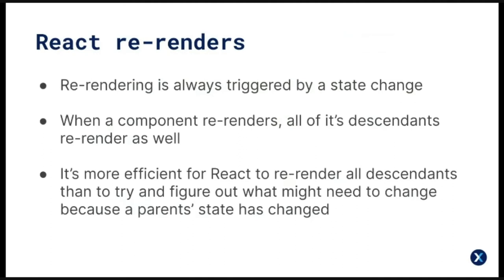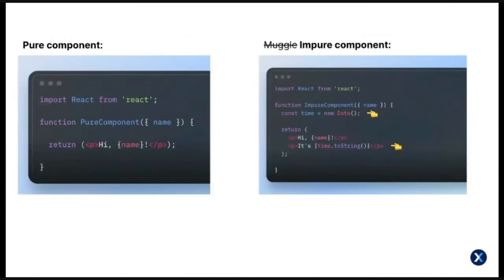React assumes that your components aren't pure. A pure component is one that would always produce the same result given certain props — such as a component taking a name and always rendering 'Hi name.' It doesn't take much to corrupt a pure component — for example, rendering the current date makes it impure, since the component will always show a different value every time it renders regardless of the prop. Because React assumes components aren't pure, it's safer to re-render all child components after a state change instead of risking showing outdated content.